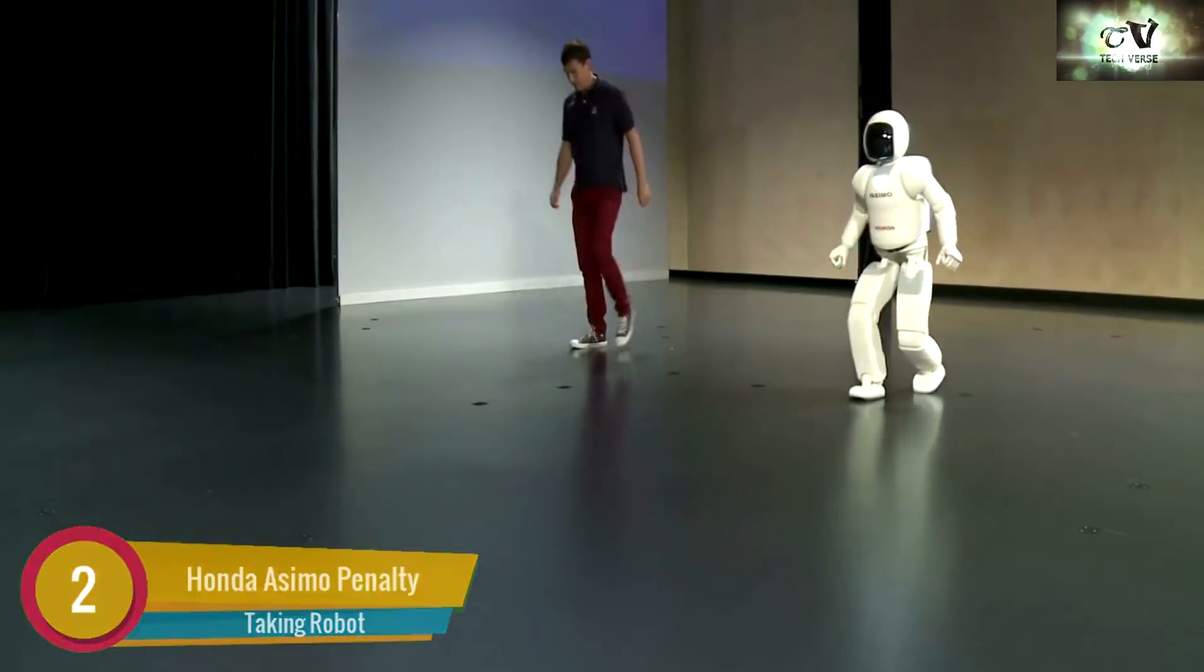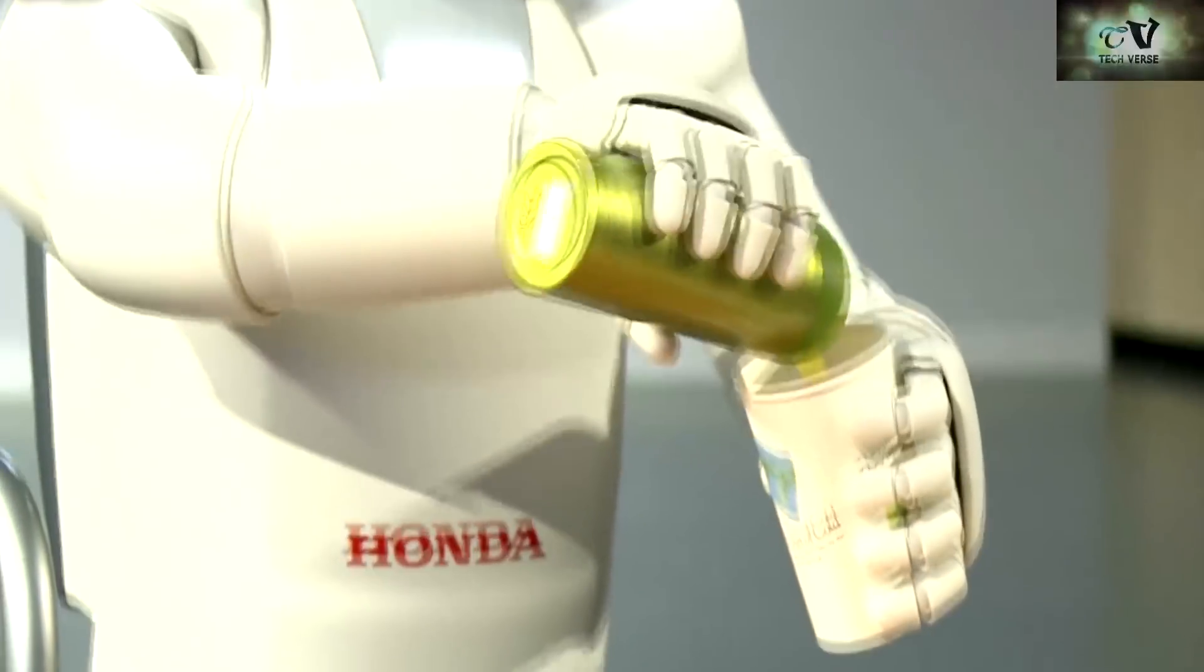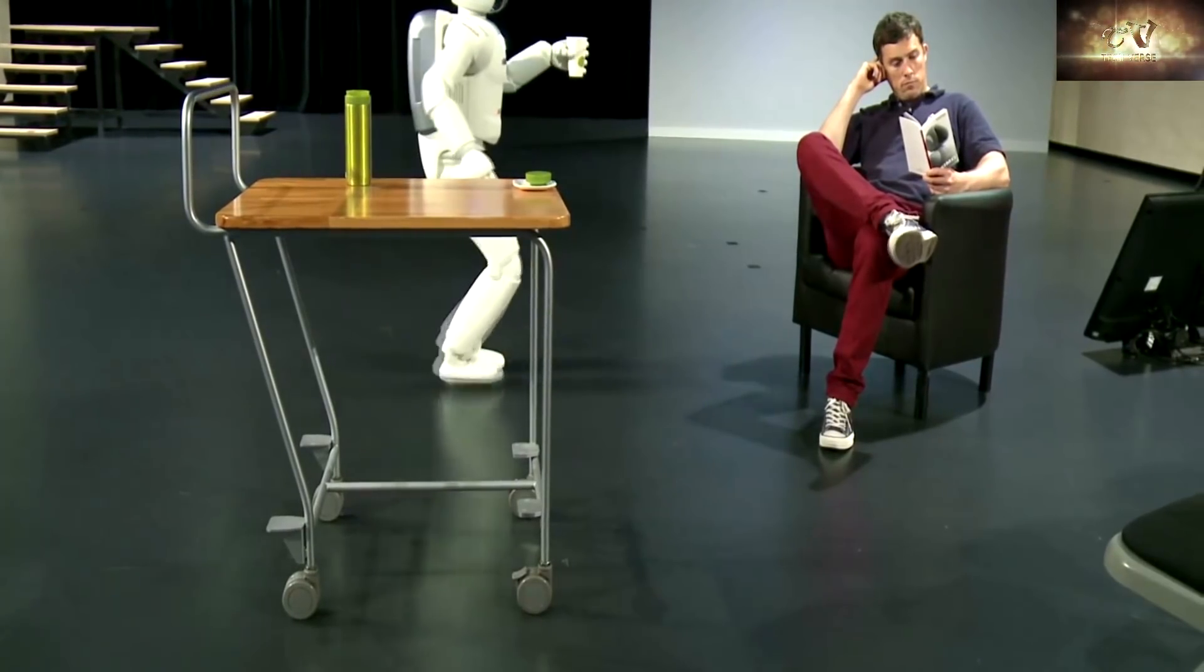Honda Asimo Penalty Taking Robot. This 160 centimeter tall robot has over 57 degrees of freedom. Since its creation in 2010, this robot has learned to do many things, the newest being to kick a ball.